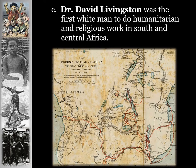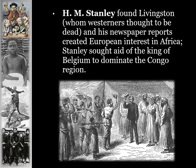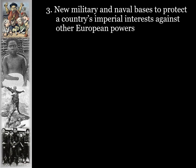Dr. David Livingston was the first white man to do humanitarian and religious work in South and Central Africa. H.M. Stanley found Livingston, who Westerners thought to be dead after several years without messages. Stanley's newspaper reports created European interest in Africa. Stanley sought the aid of the King of Belgium to dominate the Congo region, telling him there were raw materials ripe for the taking. Eventually King Leopold of Belgium took him up on this and would exploit the area as much as possible.